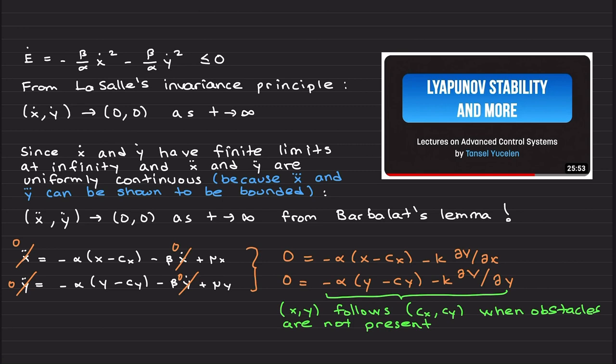The punchline is this analysis shows that we follow cx and cy when obstacles are not present. Of course, if there is an obstacle on top of the point that you want to reach, you will never follow. I am going to end the video here. In the next video, you are going to see a MATLAB example of how I coded this for obstacle avoidance.